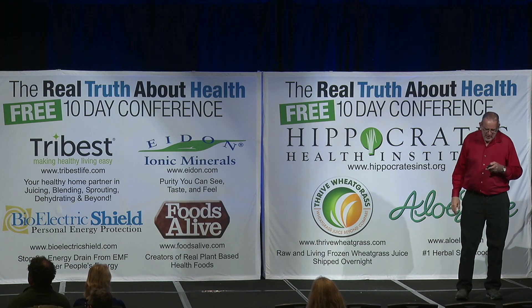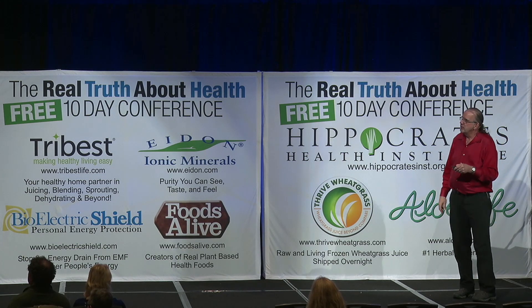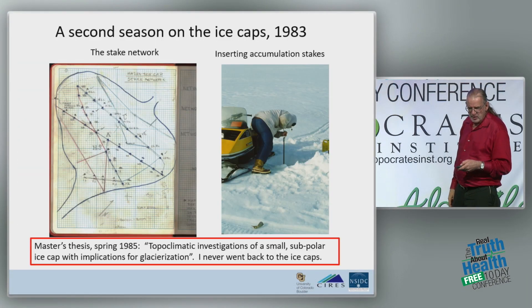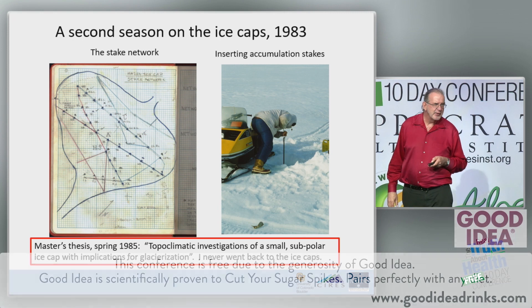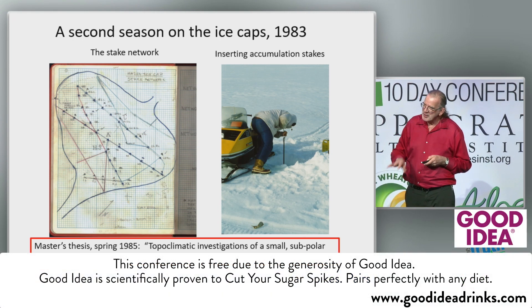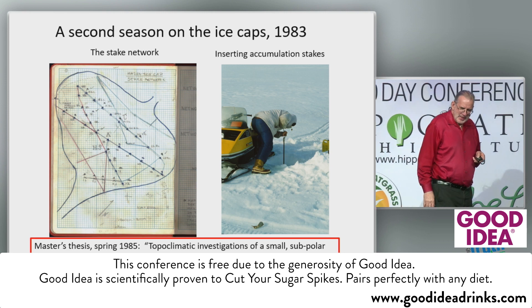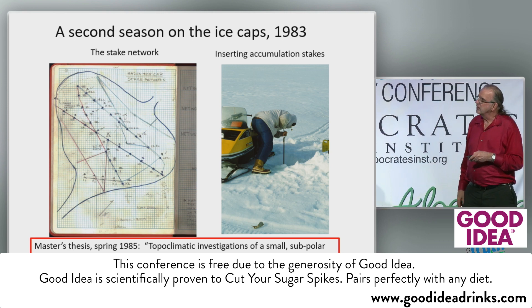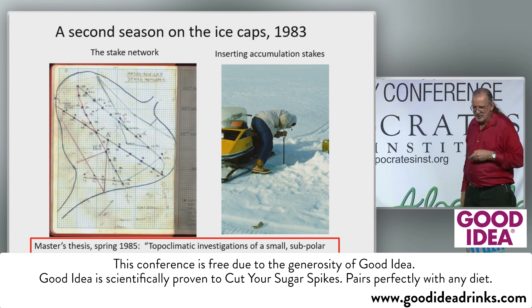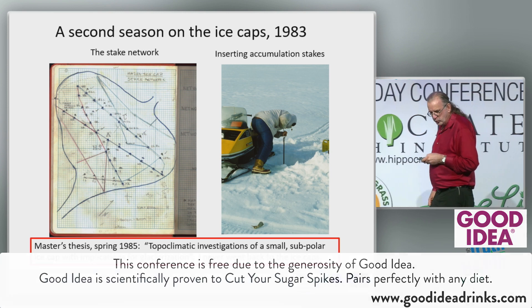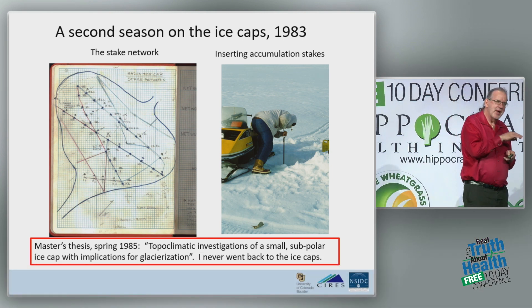The idea was we were going to put in this big network of stakes — and we did put in this big network. You can see that's my old field book actually from the time. If you're a climate scientist like this, you never throw away your old field books; they stay on your shelf forever. This was the stake network, and you see all these locations of the stakes. And this is one of my field assistants back then, Mike Pilecki, drilling into the ice to put in one of these stakes. The idea was to go back year after year and do these measurements to see what was happening to this ice cap.